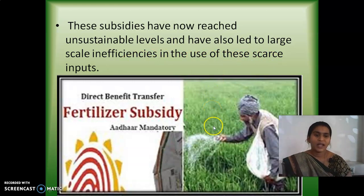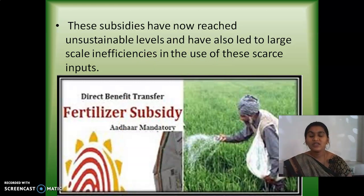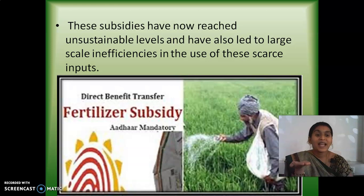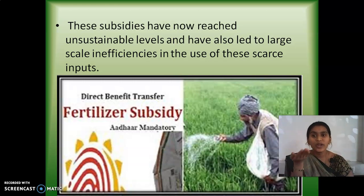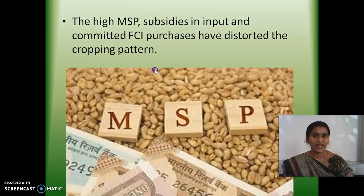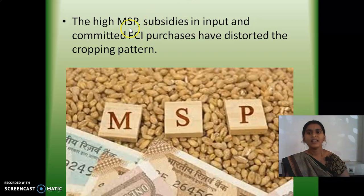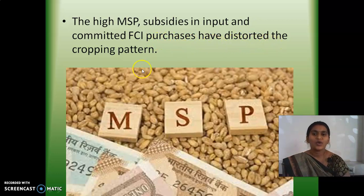As we know from the green revolution — it was one of the successful revolutionary activities in the agricultural field, but still we have some drawbacks. We started to use irrigation facilities and fertilizers more and more, and due to that, land degradation happened. That is the inefficiency — the overuse of these inputs started to create problems. The high minimum support price, subsidies on inputs, and committed Food Corporation of India purchases have disordered the cropping pattern.